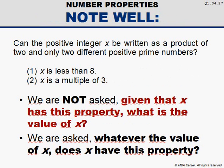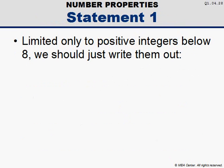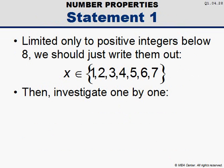Now, let's enumerate statement 1. Statement 1 tells us that x is less than 8. We know that x is a positive integer, so given that we are restricted only to those positive integers below 8, we would do well to simply list out all the possible values for x. Then, we test these values one by one to see whether any of them could be written as the product of two distinct primes. 1 cannot, 2 cannot, 3 cannot, 4 cannot, and 5 cannot.